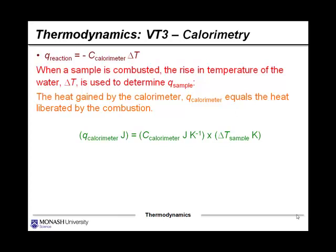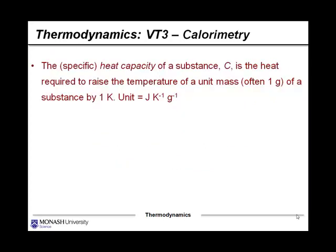We can perform reactions to determine how much heat a calorimeter might absorb when a chemical reaction takes place — we know how much energy is absorbed for every degree of temperature increase, or decrease in the case of an endothermic reaction. The heat of the sample is equal to the negative of the heat change in the calorimeter. The specific heat capacity of a substance, given the label C, is the heat required to raise the temperature of a unit mass — usually a gram — of a substance by one kelvin. The units are joules per kelvin per gram, or J·K⁻¹·g⁻¹.